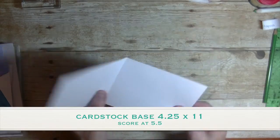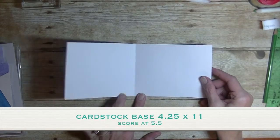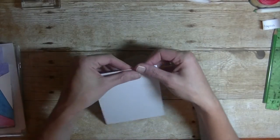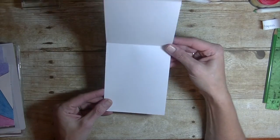Alright, so to get started you need a piece of cardstock. I'm using white. This measures four and a quarter by 11. Score that five and a half inches in the center. Go to crease that and the card will open up like a calendar top to bottom.